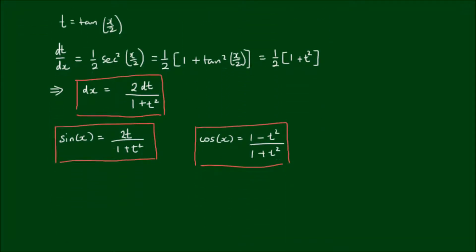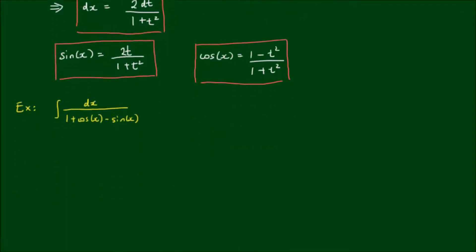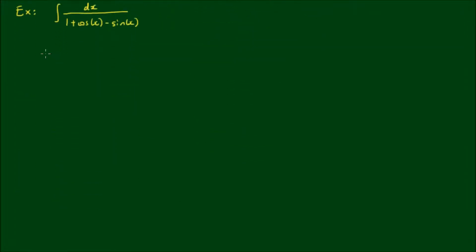So knowing this, let's start with the example. Let's find the integral of dx / (1 + cos(x) - sin(x)). The integral becomes: dx, which we found equals 2dt / (1 + t²).